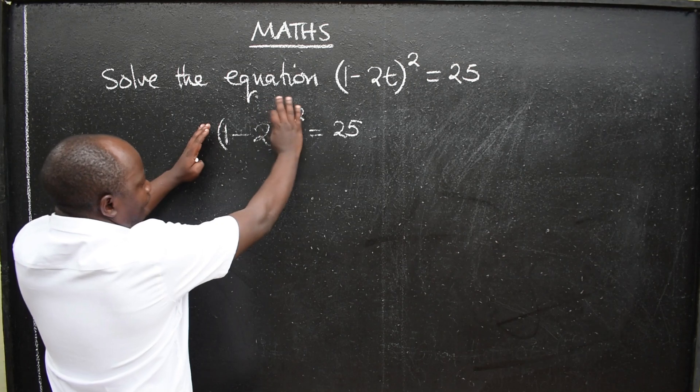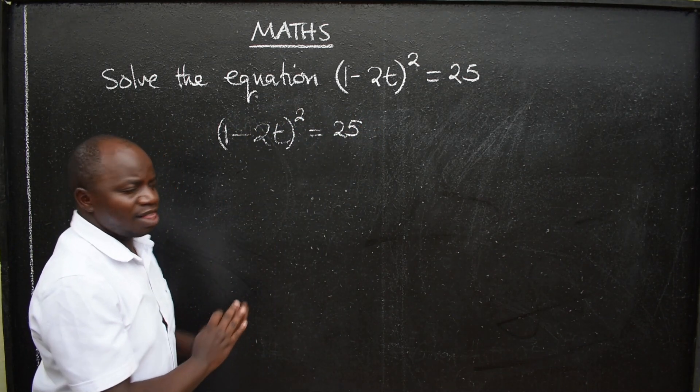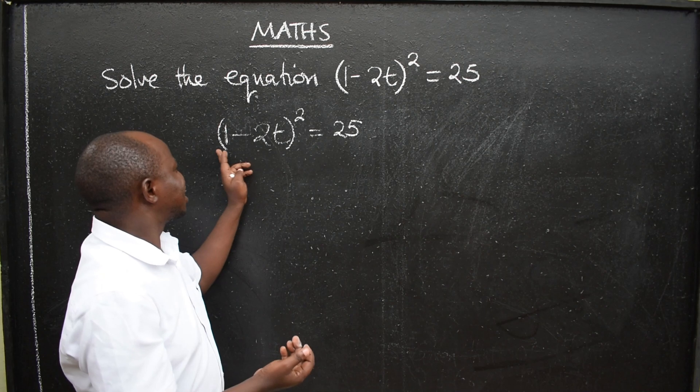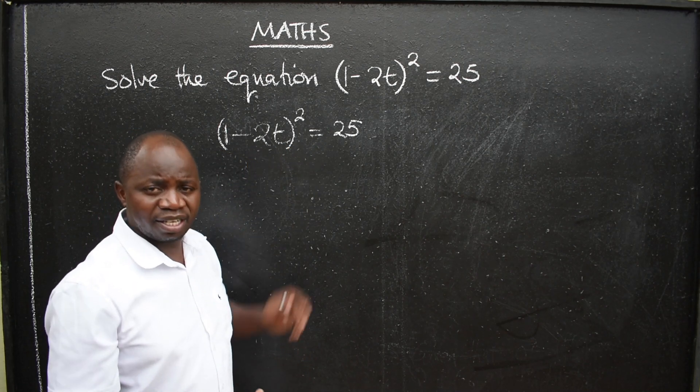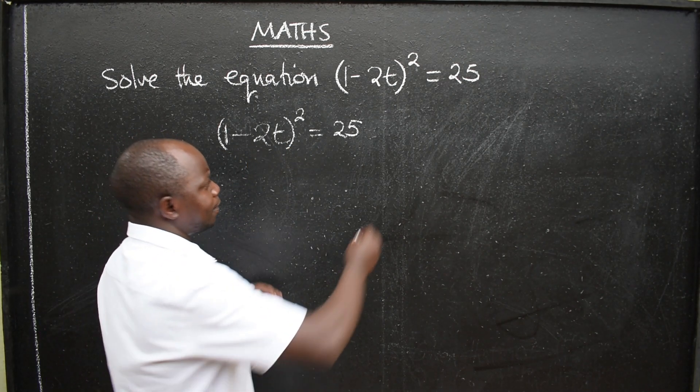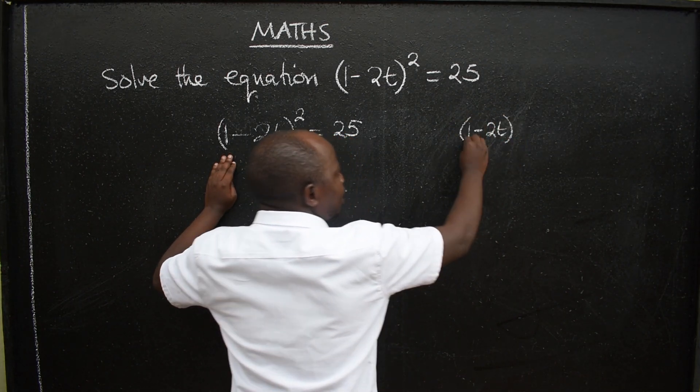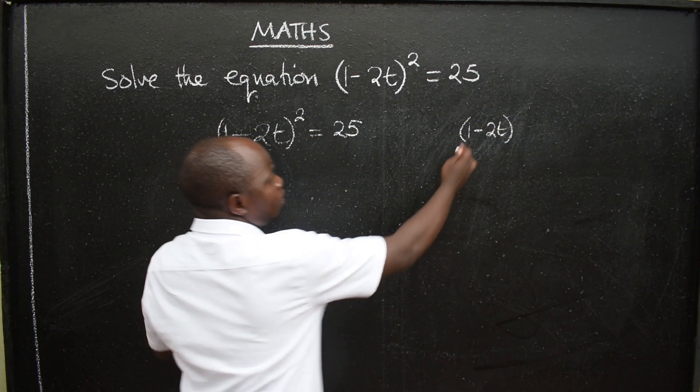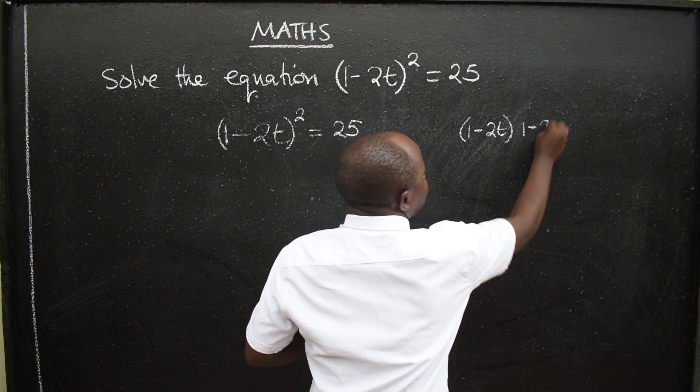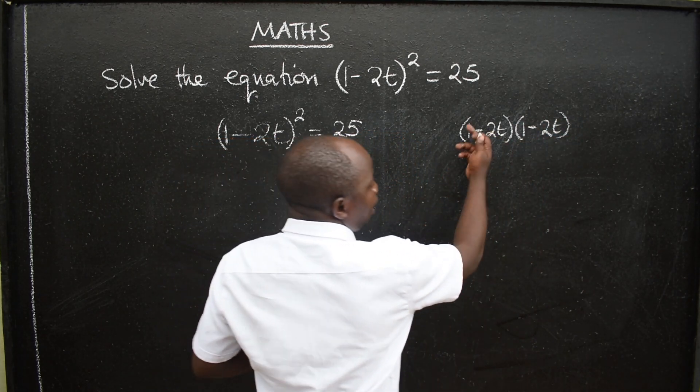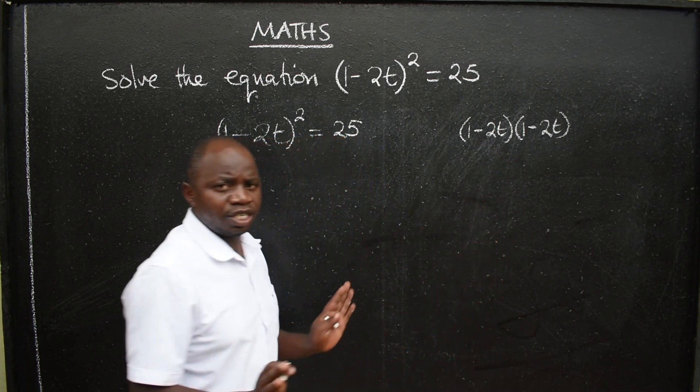When you have such kind of questions, there is no need of you starting expanding this. No need for that. But 1 minus 2t, if I want to expand, I'll say (1-2t) another (1-2t). I see that. Then I start multiplying 1 times 1. But there's no need.